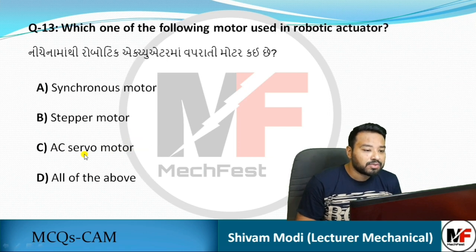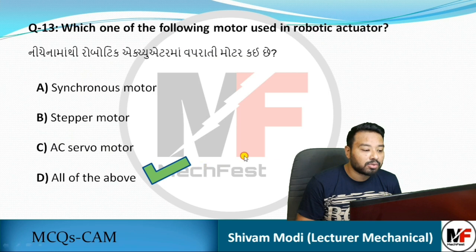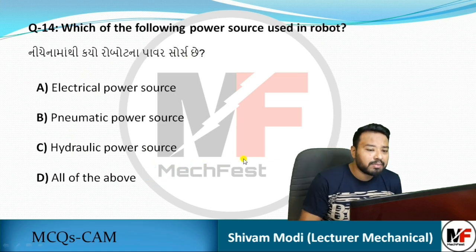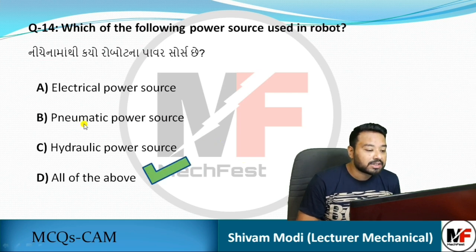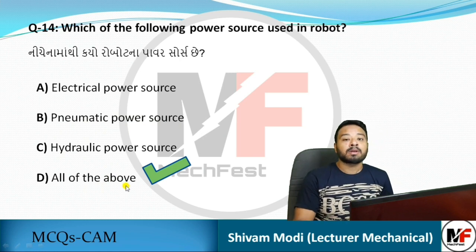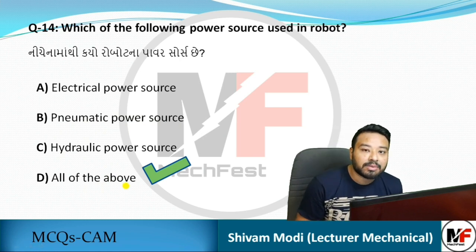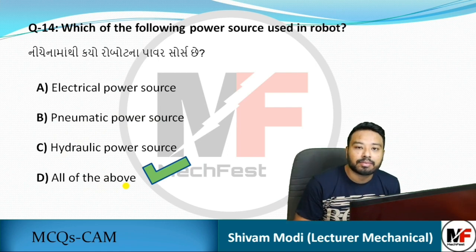Next question: which motor is used in a robotic actuator? The answer is all of the above. Next question: which power source is used in robots? Electrical power, pneumatic, and hydraulic power sources can all be used. Friends, note that most 'all of the above' type questions are less likely to be asked in the exam — keep that in mind.